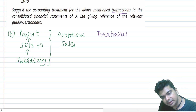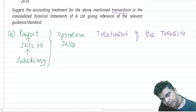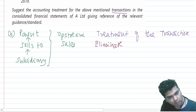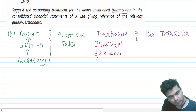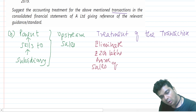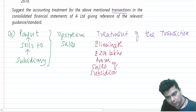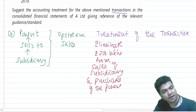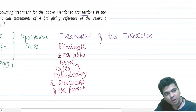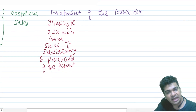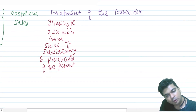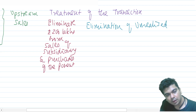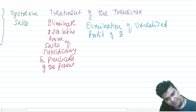For Part B: the subsidiary sells to the parent — this is upstream sales. Treatment of the transaction: eliminate rupees 200 lakhs from sales of the subsidiary and purchases of the parent. Now, the cost was 150 lakhs and the selling price is 200 lakhs, so 50 lakhs of profit has been booked. We have to eliminate the unrealized profit of rupees 50 lakhs.